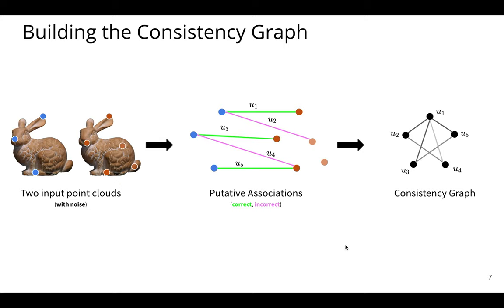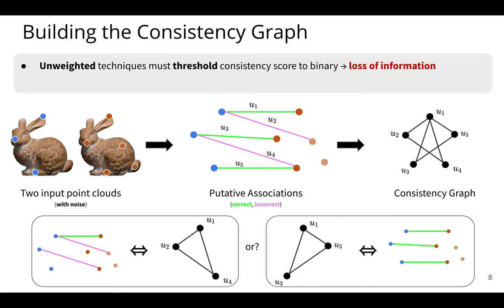So previously, I talked about weighted versus unweighted. And if we look at what the unweighted class of works do, they take this graph and threshold it to a binary or unweighted graph. And this leads to loss of information. And this shows an example here in the bottom of the screen, showing the challenge of losing this information, because now there are these two competing cliques, and it's not clear which clique to choose.